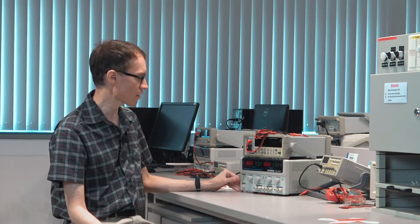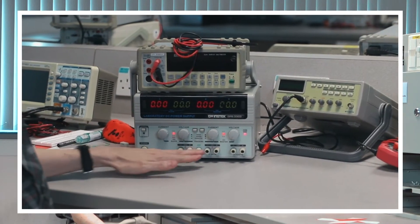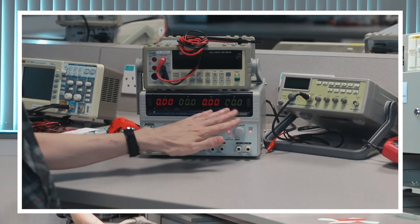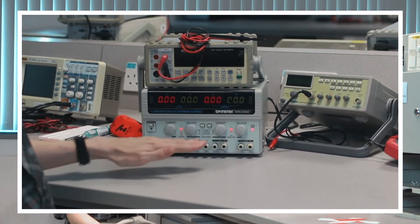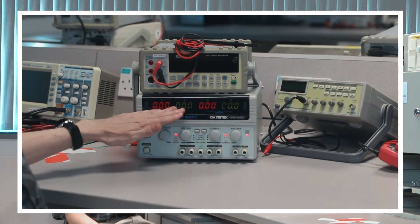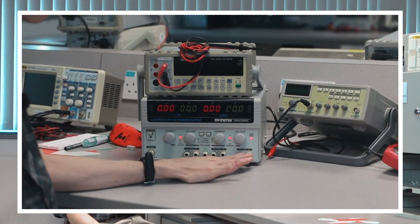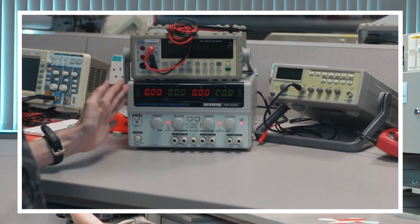This particular power supply has three different channels. Channel one is on the right, so these two indicators refer to channel one, and channel two is on the left, so these two indicators refer to channel two. Channel three is a fixed five-volt power supply on this particular model.